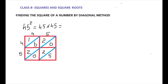Now add along each diagonal. In the first diagonal it is only 5, so that stays as 5. In the second diagonal: 0+2+0 = 2. In the third diagonal: 2+6 = 8, then 8+2 = 10, so write 0 here and carry over 1 to the top. Add that carry to the fourth (final) diagonal, which becomes 2+1 = 2. So the answer for 45² is 2025.